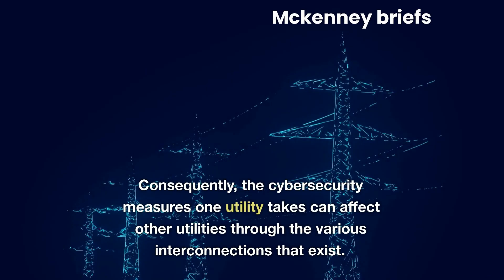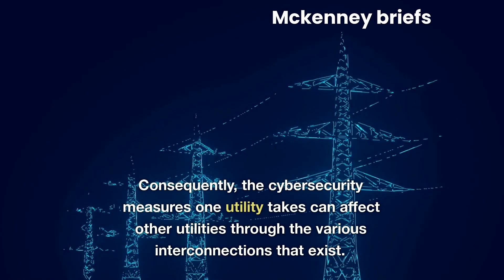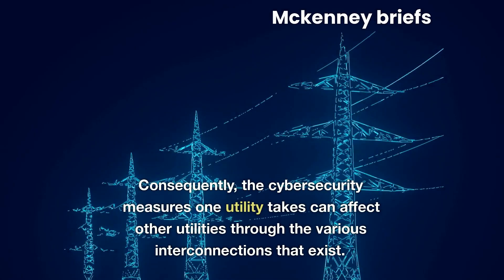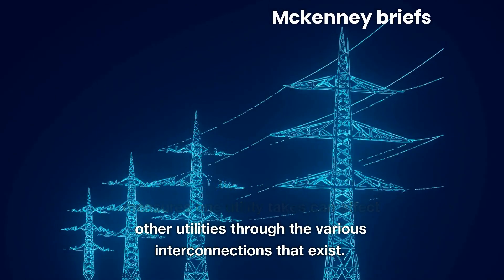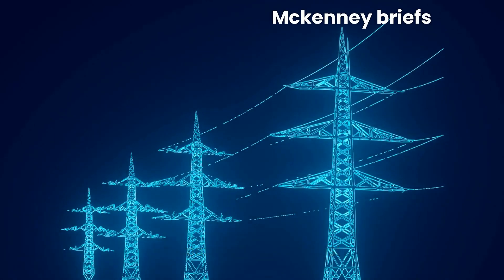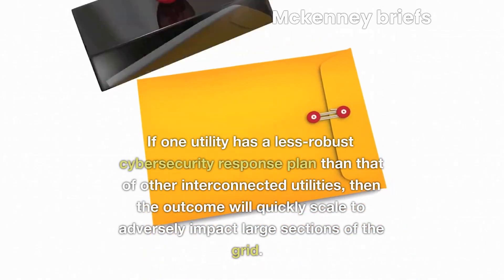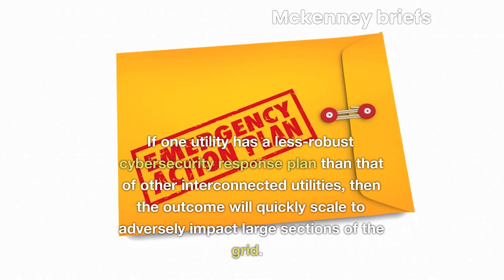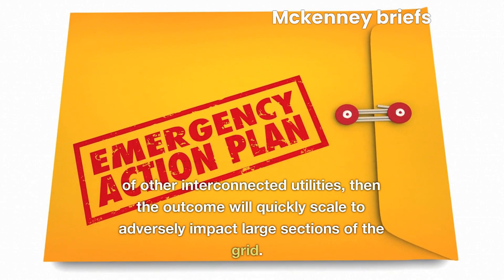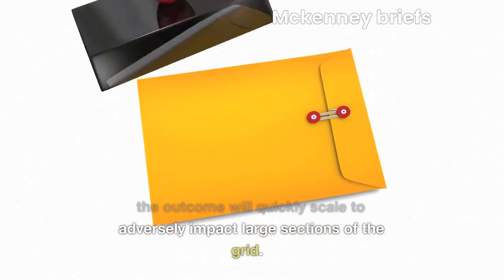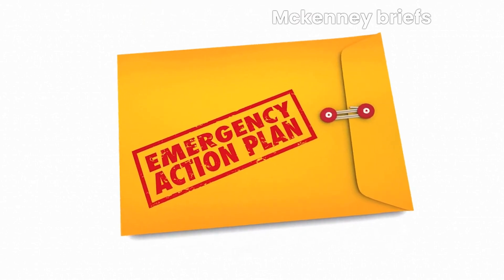Consequently, the cyber security measures one utility takes can affect other utilities through the various interconnections that exist. If one utility has a less robust cyber security response plan than that of other interconnected utilities, then the outcome will quickly scale to adversely impact large sections of the grid.